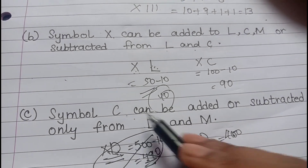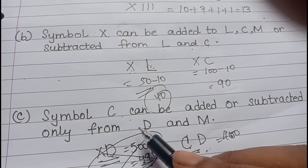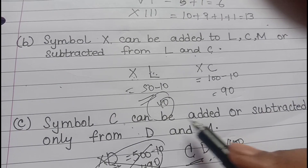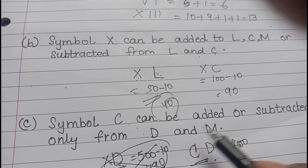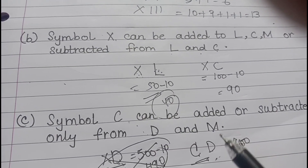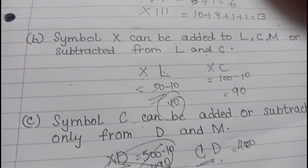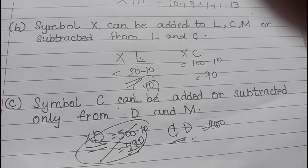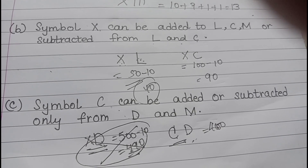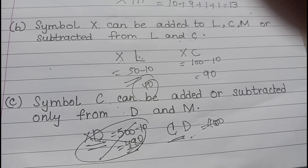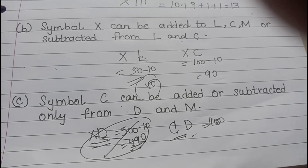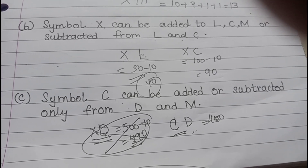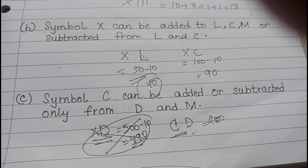Always remember: you can only subtract C from D and M. You cannot subtract X from D or M, and you cannot subtract I from D or M. I hope you have now understood the rules and will be able to make Roman numerals. In my next video I will teach you how to make Roman numerals.